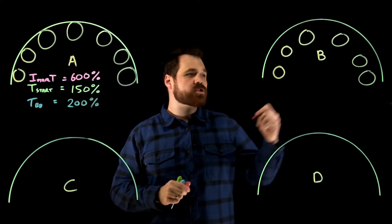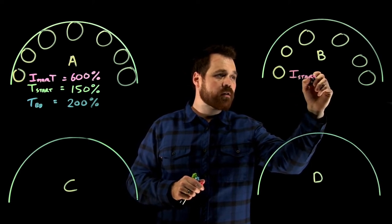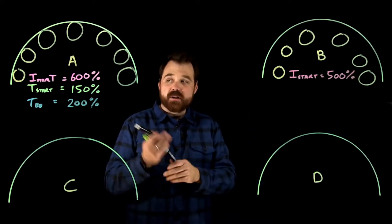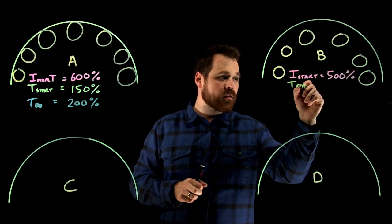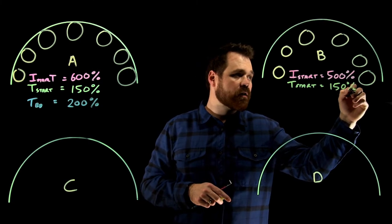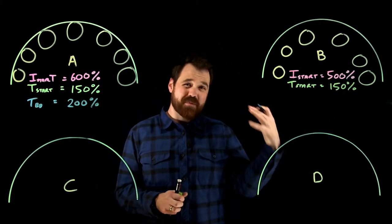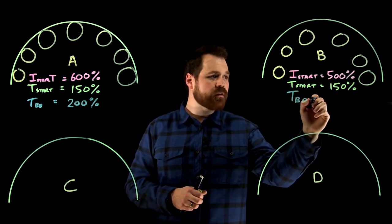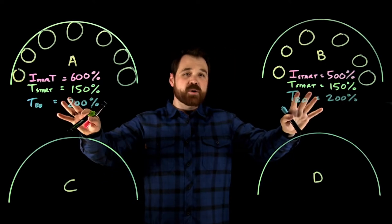It's going to have the same torque values as our A, but we get a little bit lower inrush. So our I at start or our inrush current is only 500%. But like I said, we're still going to see at start, we're still going to see that 150% of our rated torque and our breakdown torque or the peak amount of torque that this motor can deliver breakdown is still 200%. So two very, very similar motors.